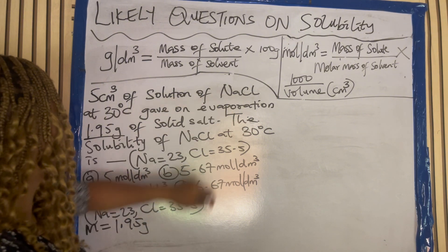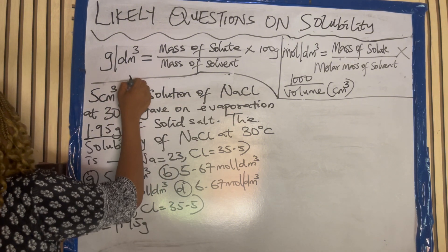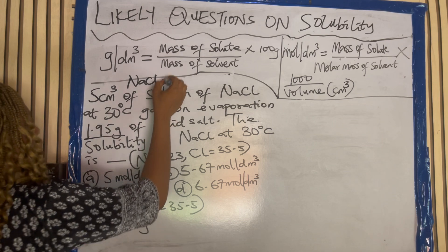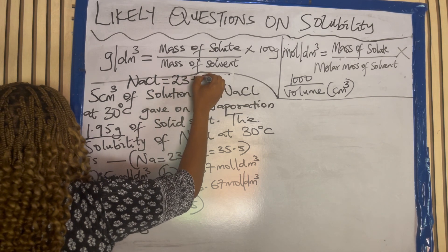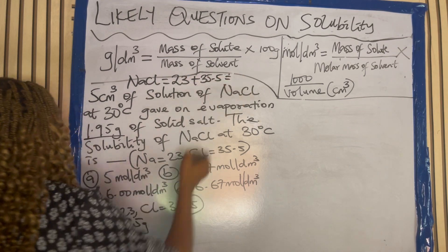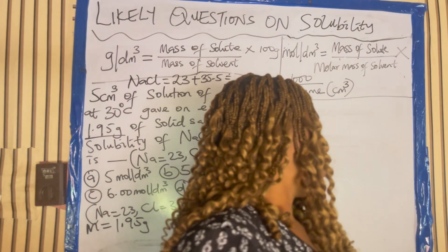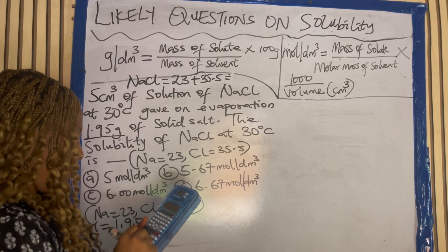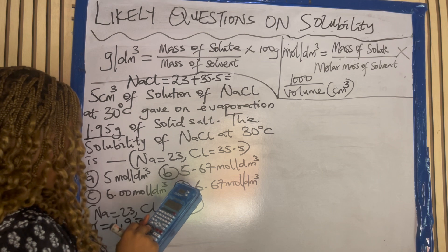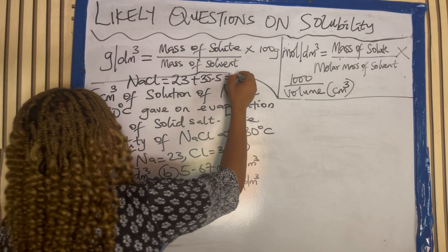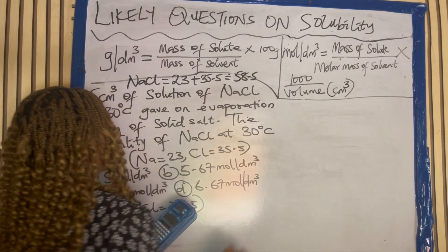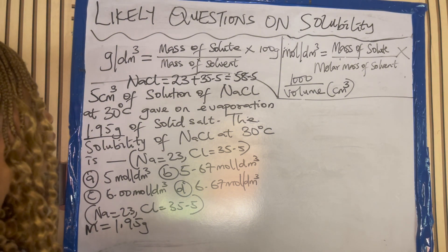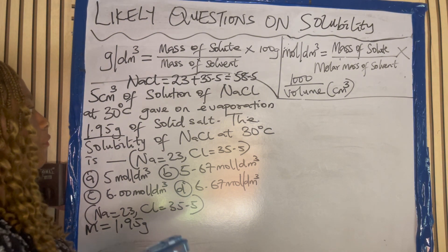We're going to find the molar mass of sodium chloride. Molar mass of sodium chloride — sodium is 23 plus 35.5 for chlorine. Let me bring my calculator and let's solve: 23 plus 35.5 gives us 58.5. That is the molar mass — 58.5 gram per mole.